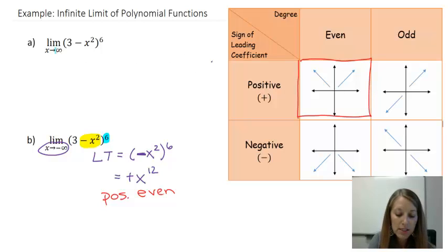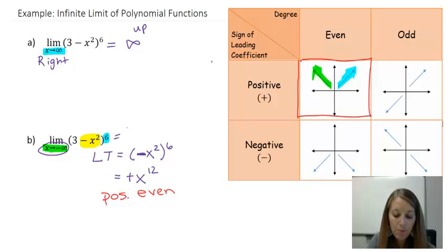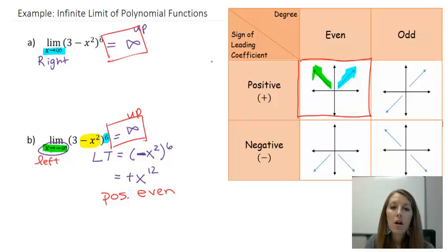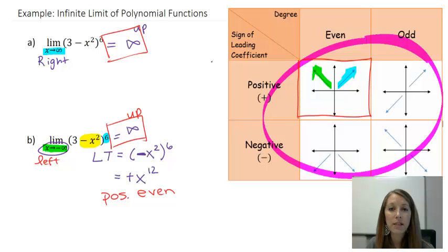When x approaches positive infinity (right-hand side of the graph), the graph goes up forever, so the answer is positive infinity. When x approaches negative infinity (left-hand side), the graph also goes up forever, so the answer is also positive infinity. Both answers are positive infinity. This summarizes how to find infinite limits of polynomial functions — it all comes back to the leading term test: is the leading coefficient positive or negative, and is the degree even or odd?